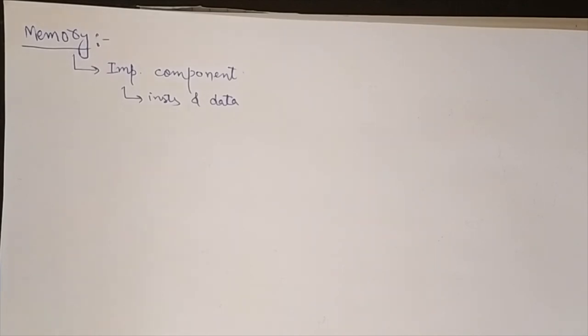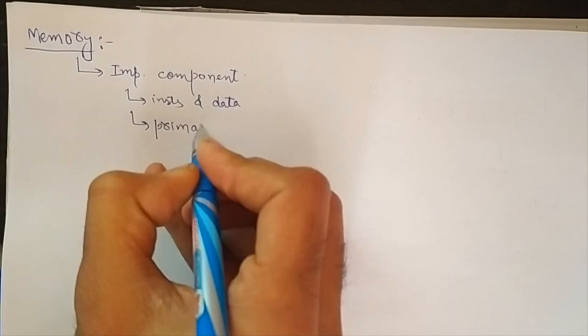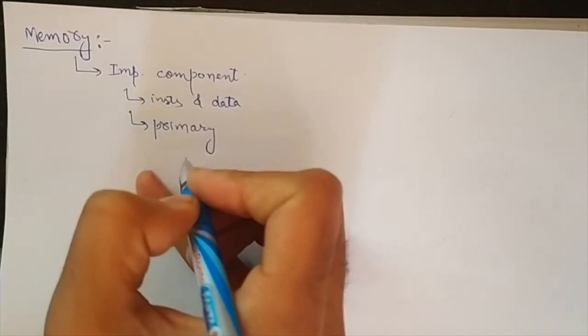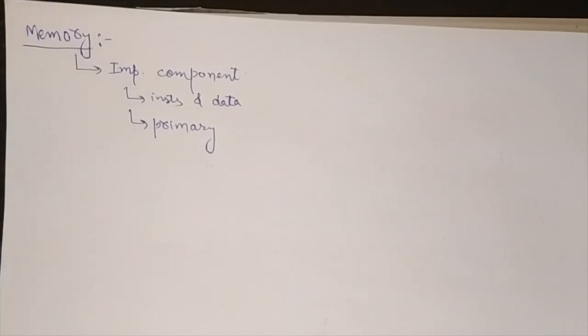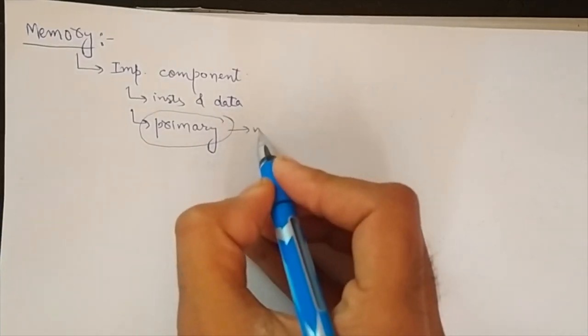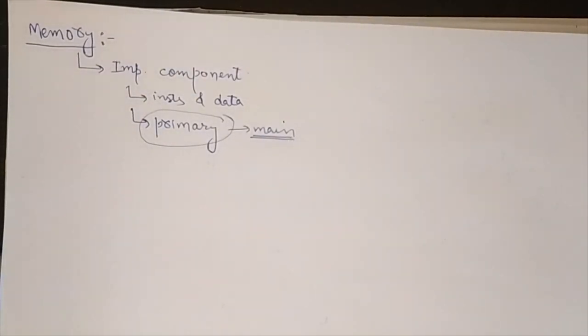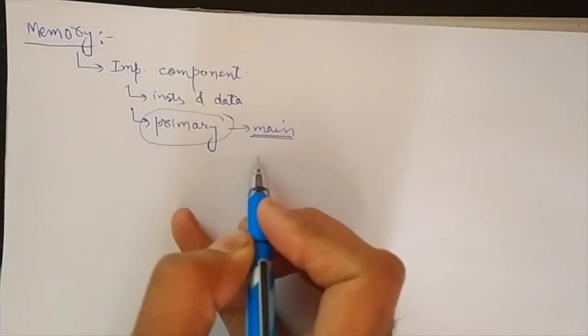In today's lecture we will be discussing about the primary memory. Primary memory means the memory that is used to store the instructions which are currently being executed by the processor. For example, if we want to run any program, that program is first stored in our secondary memory. From the secondary memory we bring that program into our main memory. So our primary memory, also called main memory, stores the programs which are currently in execution.